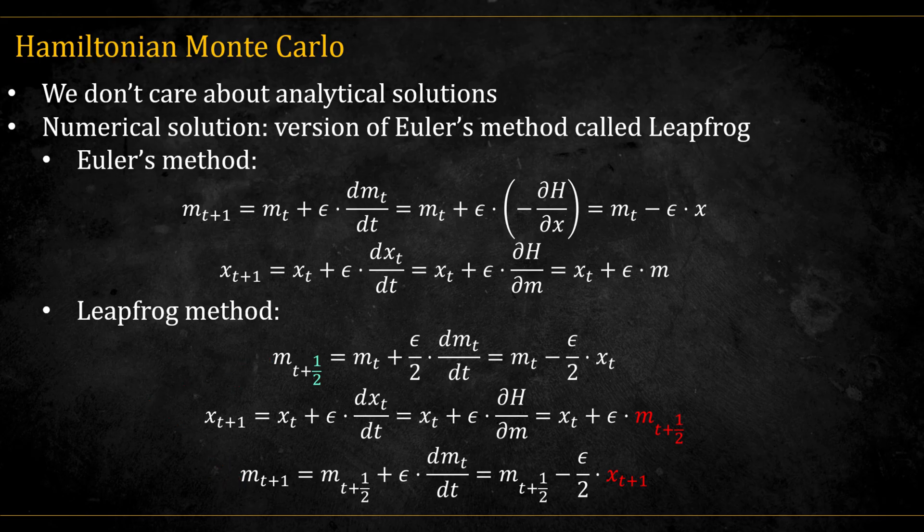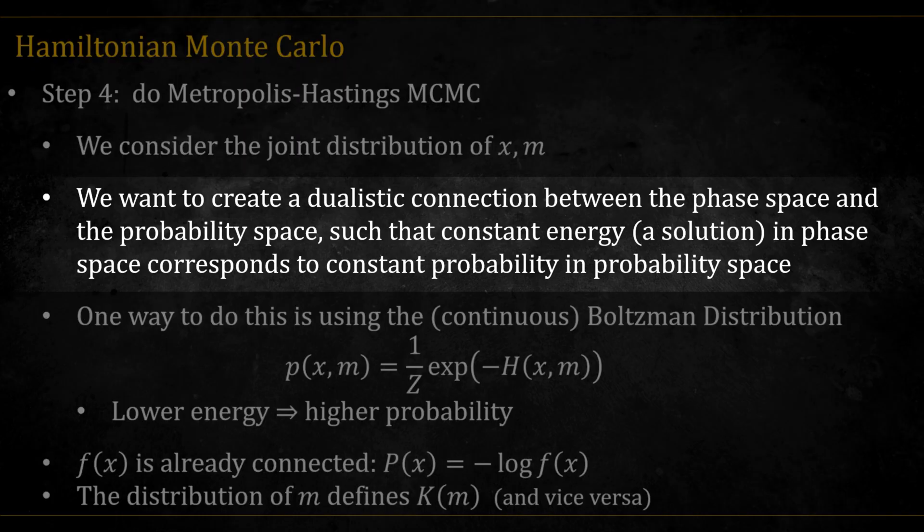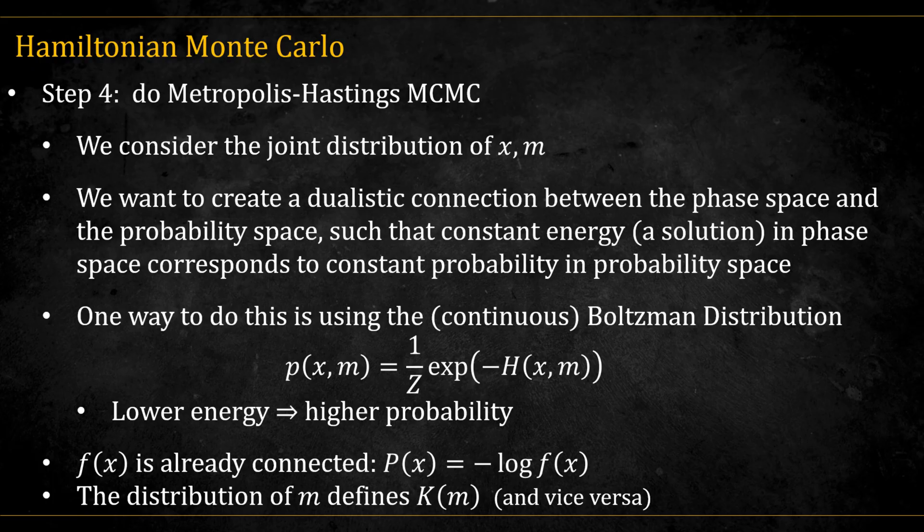The fourth step is to apply the Metropolis-Hastings algorithm. To do this, we don't just consider the distribution of X, but the joint distribution of both X and M. The idea is to create a dual connection between phase space and probability space. A trajectory of constant energy in phase space corresponds to a region of constant probability in probability space. One way to establish this link is through the Boltzmann distribution, where probability is proportional to the exponential of negative energy. In other words, lower energy corresponds to higher probability. Since the potential part of the Hamiltonian comes directly from the negative log of f of x, f of x is already tied to this probability. What the Boltzmann relation adds is that the distribution of M defines the kinetic energy term. And conversely, the choice of kinetic energy determines the distribution of M.